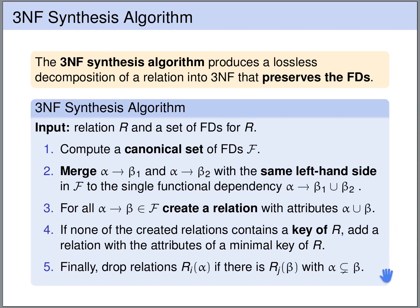Next, we have two final checks. First, we check whether one of the tables that we have created contains a key of the original relation R. If none of the tables contains a key of the original relation R, then we add a new table with the attributes of a minimal key of R. And finally, we drop all tables that are subsumed by other tables. So if we have a table ri with attributes alpha and a table rj with attributes beta, such that alpha is a subset of beta, so the table ri is fully subsumed in the table rj, then we drop the table ri.